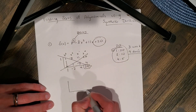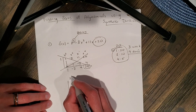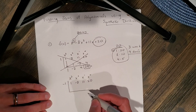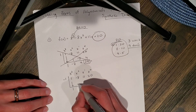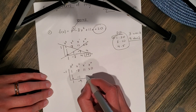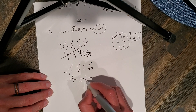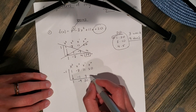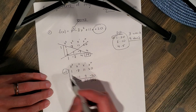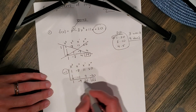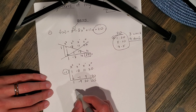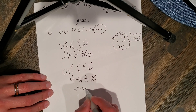Let's try negative 1. I'll rewrite everything. Bring down the 1. Negative 1 times 1 is negative 1. Negative 8 and negative 1 makes negative 9. Negative 1 times negative 9 is positive 9. 11 plus 9 is 20 — looks like we have a winner. Negative 1 times 20 is negative 20. And 20 minus 20 is 0. Perfect — we found one of the zeros.